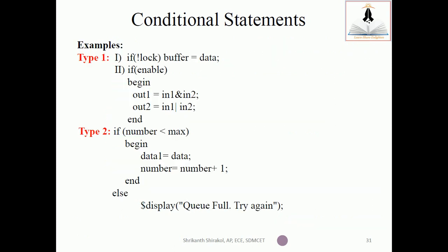For Type 1 examples: if the condition checks lock with a negation symbol — if lock is 1, negated is 0, so it is false and the statement does not execute. If lock is 0, not-of-0 is 1, which is true, so data is assigned to buffer. Second example: if enable is 1, the statement executes; if enable is 0, the statements will not execute.